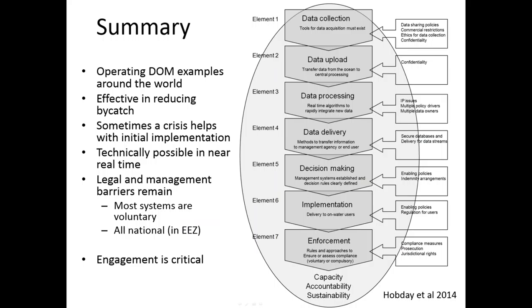In summary from these examples: they have differing complexity and are operating around the world. Where they have been used, they've been effective in reducing bycatch. Unfortunately, many have come into play when there was a crisis — such as a fishery closure or whale strikes — that forced a solution. They're technically possible because the first four elements of implementing a dynamic management system are in place, but some legal and management barriers remain. Most systems remain voluntary, and all examples we know of are happening inside countries' EEZs. Engagement with stakeholders is really critical.